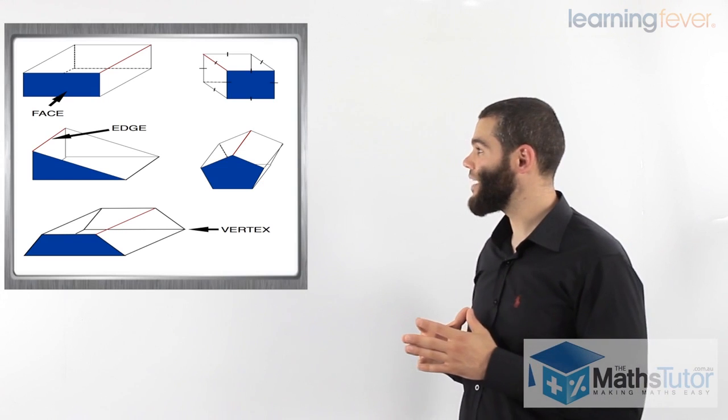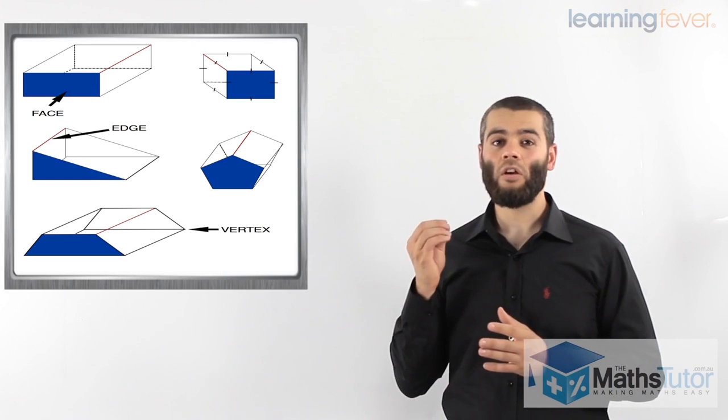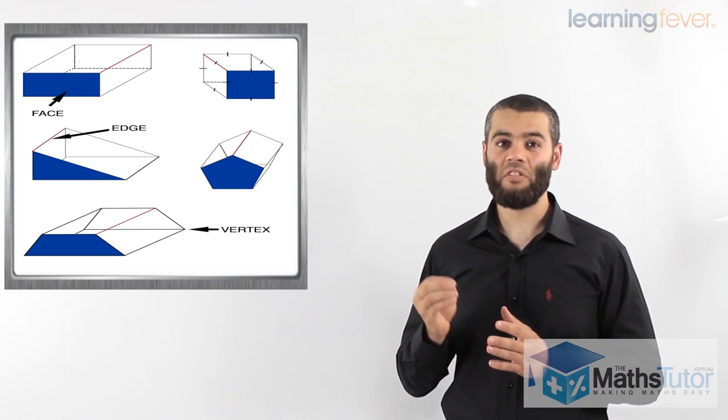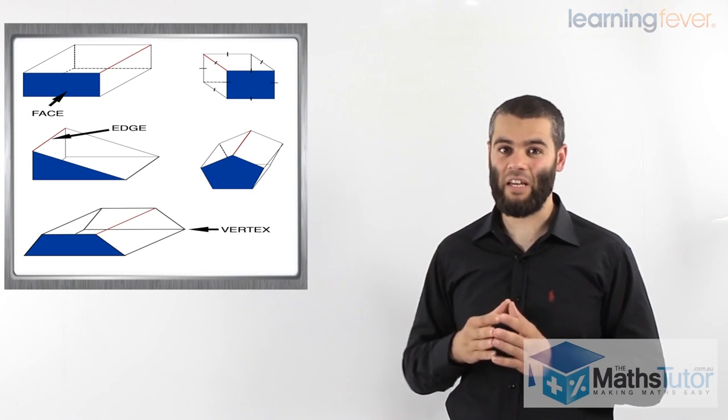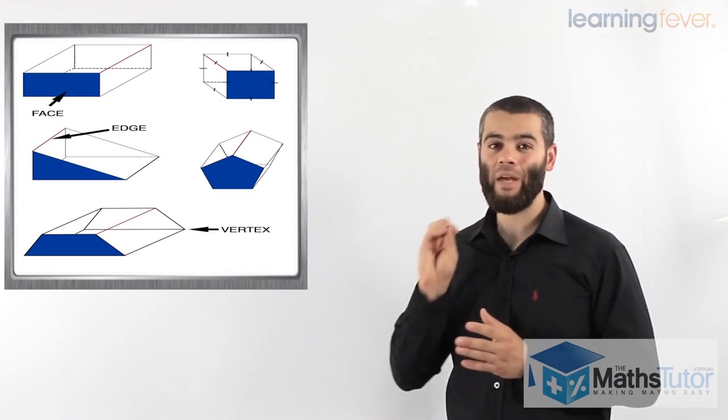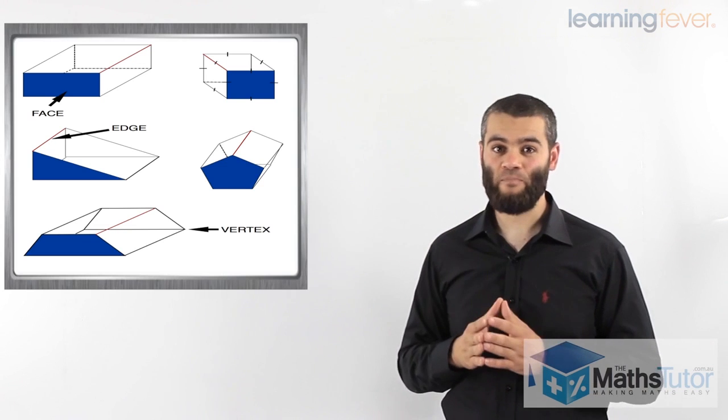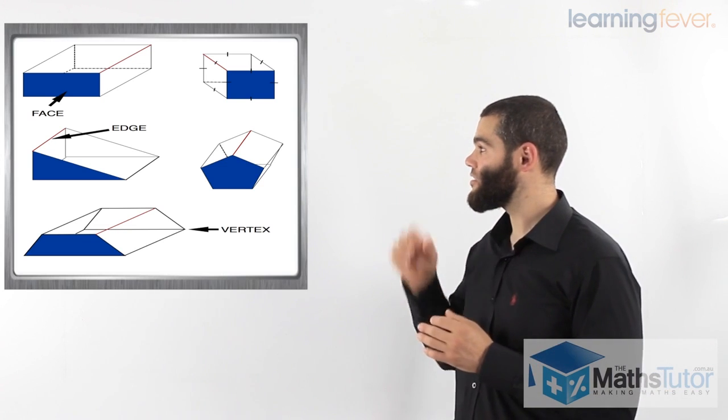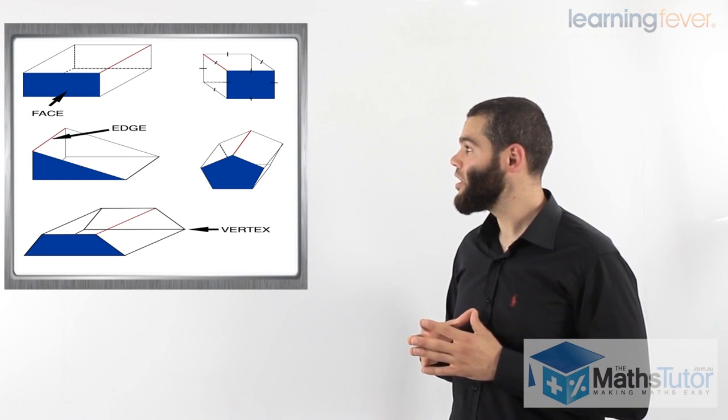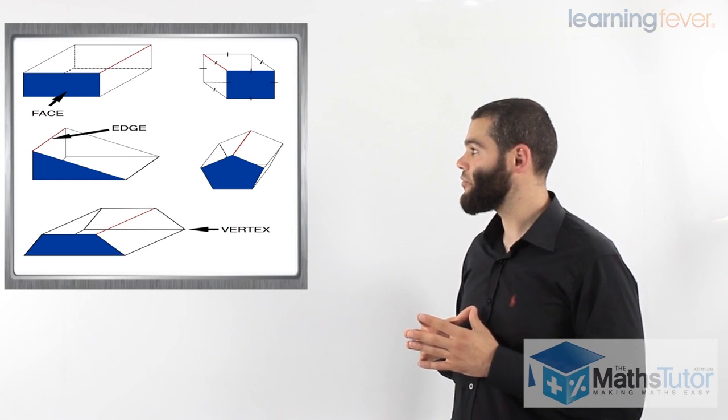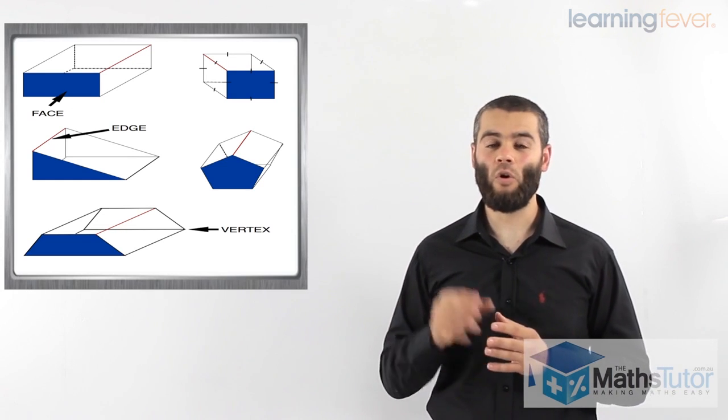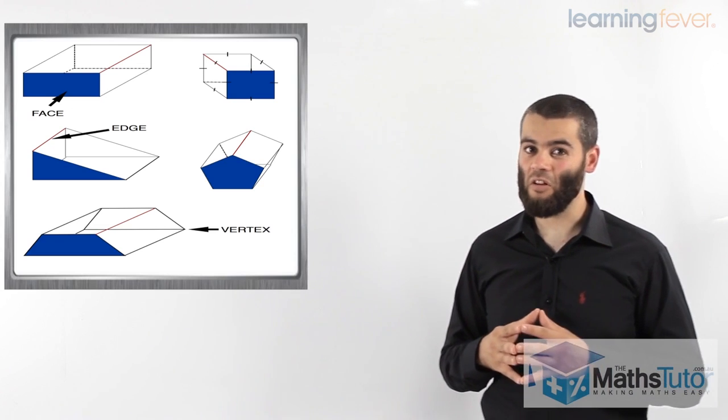And we also know a very special feature that is available there called the vertices. The vertices are plural for the vertex. The vertex is what we know in baby language as the corner. The corner, as you can see, pointed there with the arrow. The vertex or the vertices are the corners on these solids.